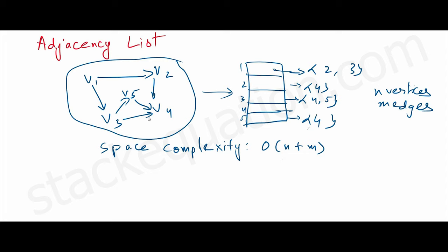From vertex two, we can see only one edge which is connecting to v4, so we link only one edge to v2. Vertex three is connecting to v4 and v5. And vertex five has only one edge toward v4. That's how we represent the graph using an adjacency list.